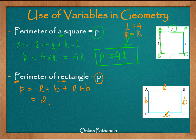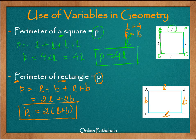Simplifying further, we cover twice l plus twice breadth, or taking two outside: 2 × (l + b). This gives us the general rule to find the perimeter of a rectangle whose length is l and breadth is b. This is how we have used the concept of a variable and the general properties of multiplication and addition to arrive at a rule to find perimeter p.